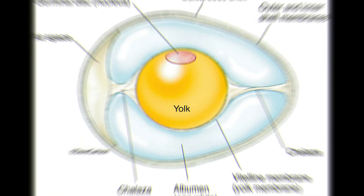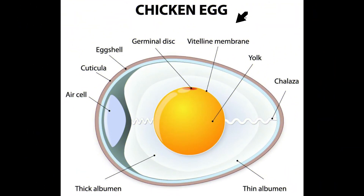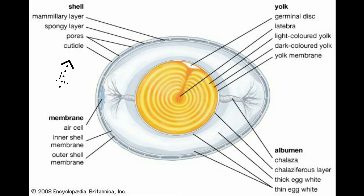The inner and outer shell membranes surround and protect the contents of the egg. The vitelline membrane surrounds the yolk. The cuticle is a slimy layer on the eggshell secreted during oviposition to keep pathogens out.